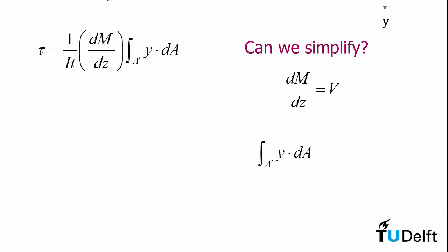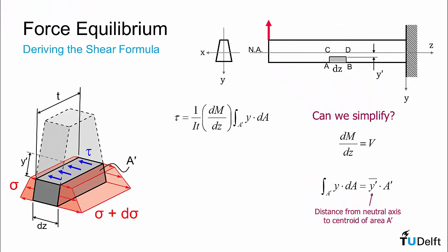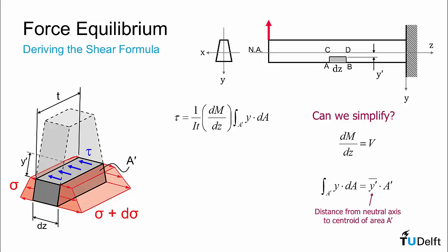We can also recall that the integral of y dA is the first moment of area. So it will be equal to the area A prime, which is our domain, times the centroid to that area A prime. So we will call that y-prime-bar, and that's the distance from the neutral axis, which is here, to the centroid of A prime. And for simplicity, we will give this a label Q, and that is the first moment of area A prime about the neutral axis.